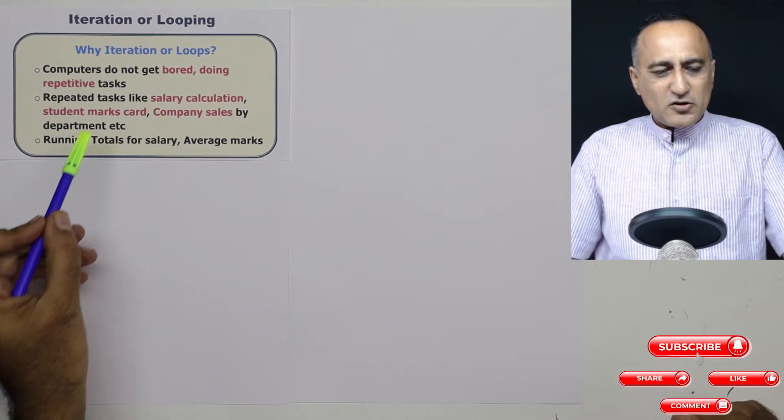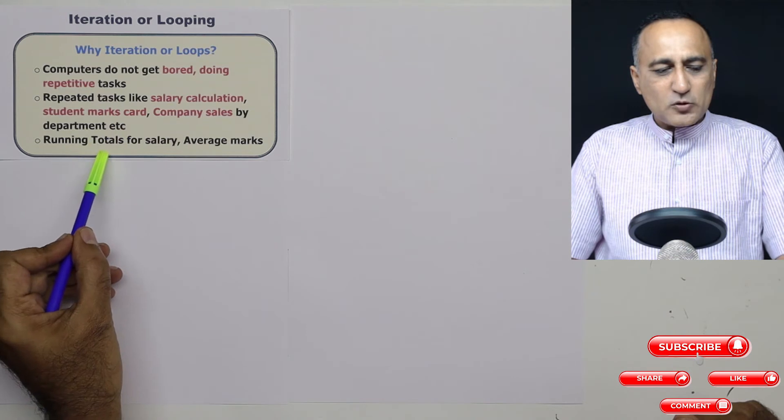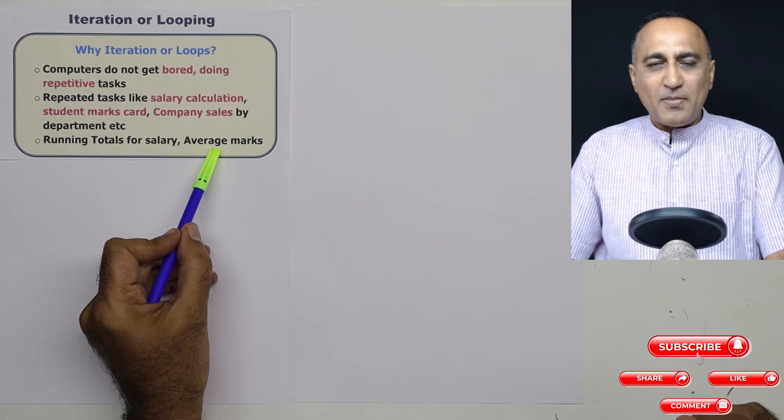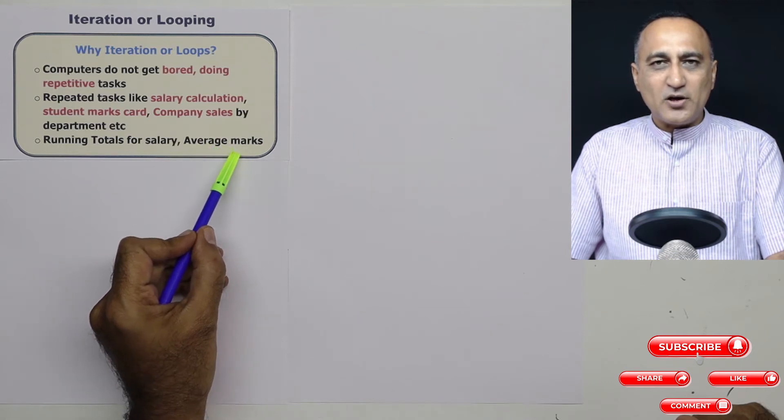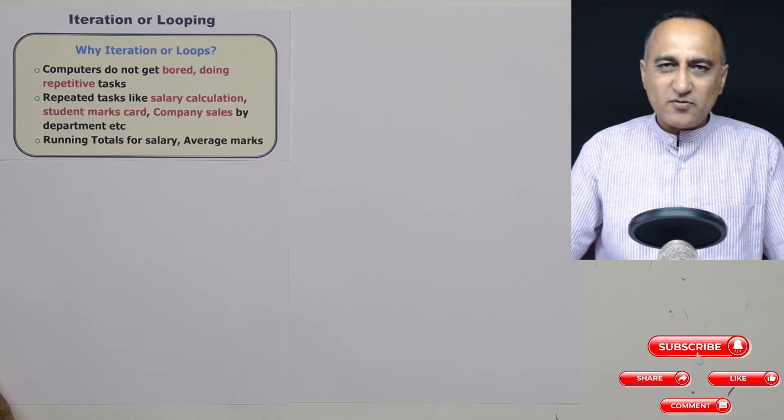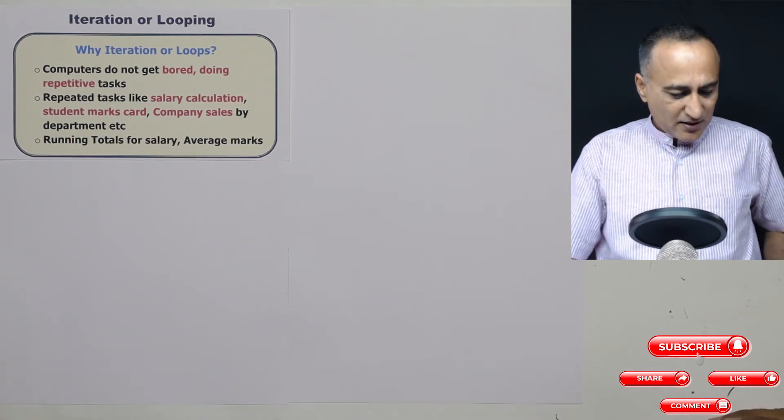the computer is not going to show any emotion because it's a machine. It's simply going to perform the task you have instructed it to do. As you're doing repeated tasks, you will also be calculating salary totals for the department, average marks by department, college, university, or state. These are very good examples of doing repetition.